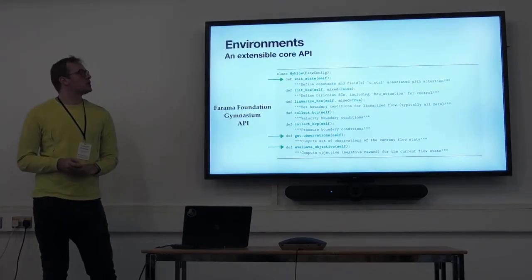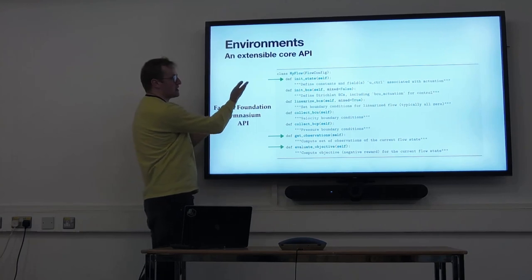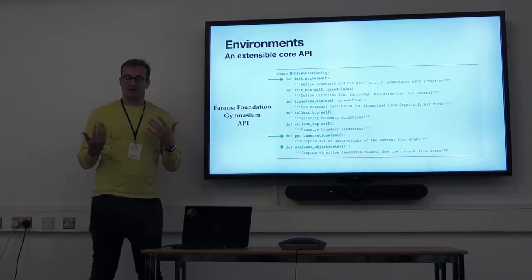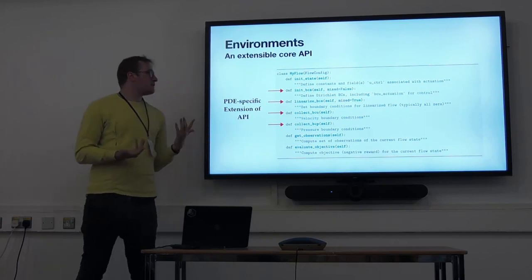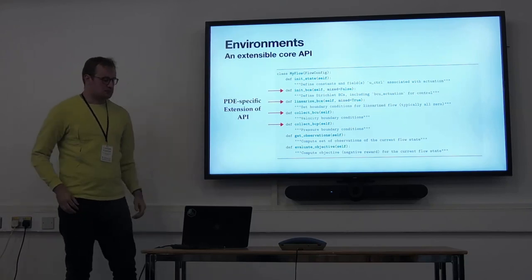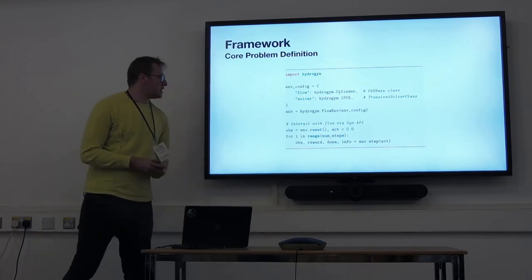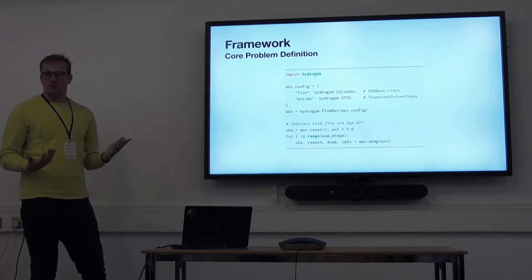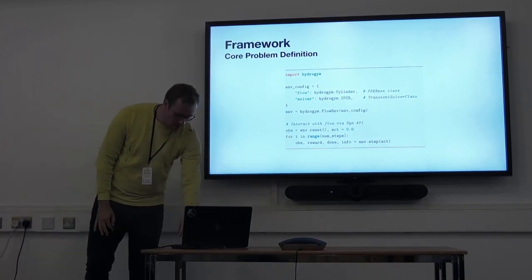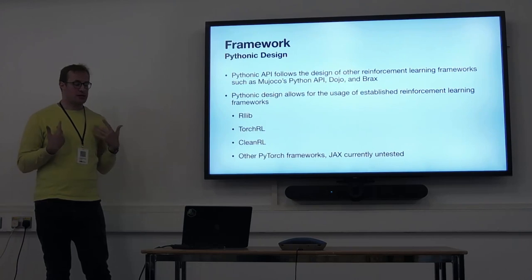That specifically looks like this — these are the three components governed by the more general RL API. You need to be able to get an initial state, get an observation and perform an action, and evaluate the control objective so that the environment is defined. We introduce another four conditions specifically for PDE control, which is the extension we provide. That's essentially how you can implement your own environment. Once you look at the core problem, everything is very Pythonic and quite compliant with the standard way you define RL computation in PyTorch.